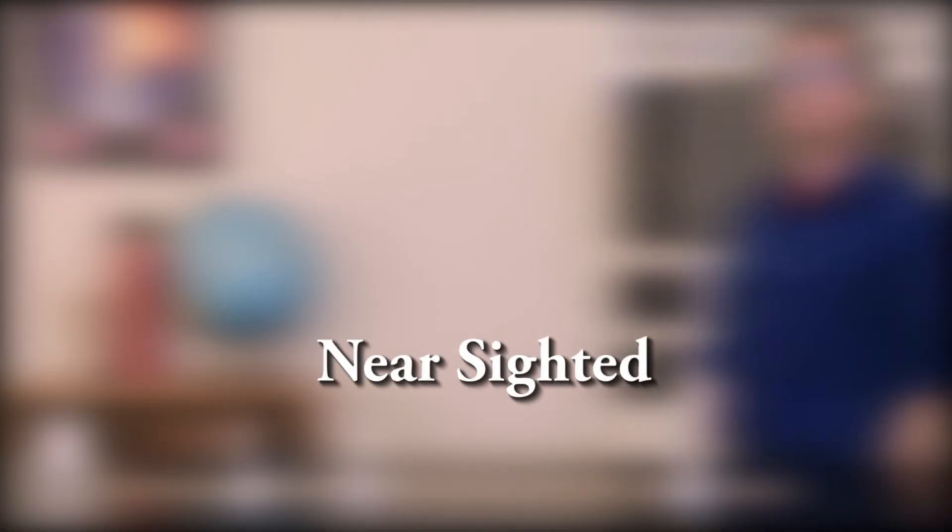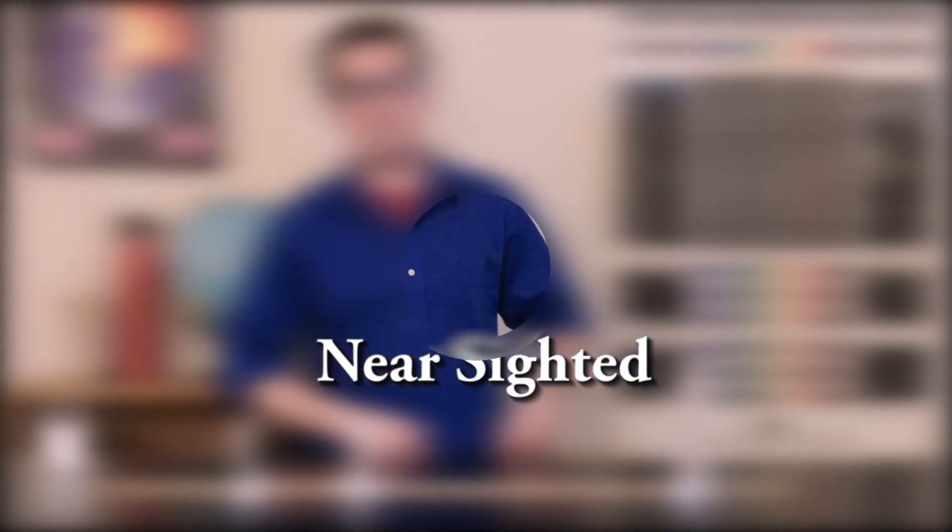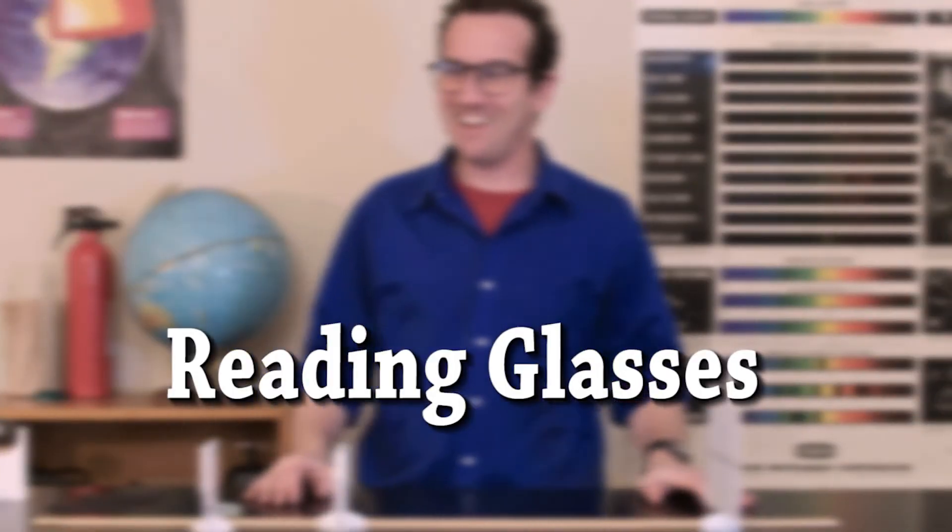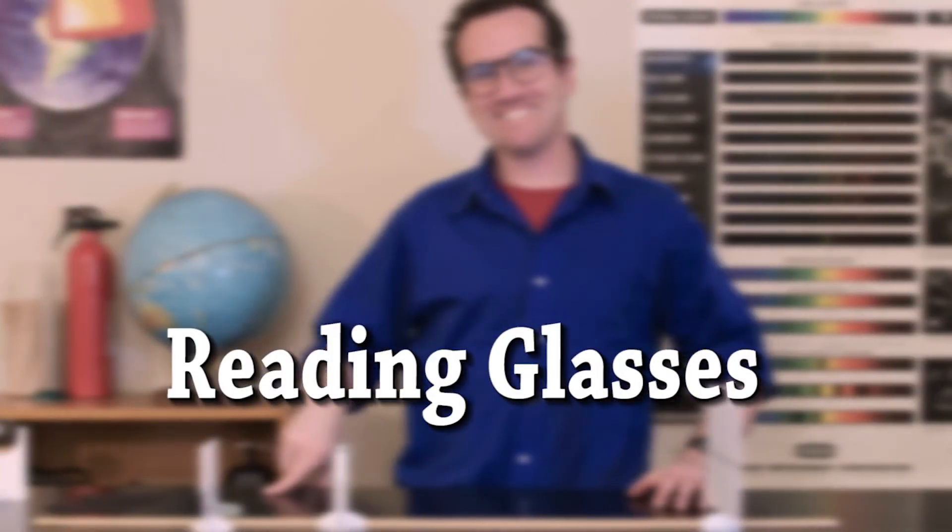If you're nearsighted, then your eye is too close, and you'll need concave corrective lenses. But for reading glasses, we'll need convex lenses, which help us focus and enlarge close-up objects.